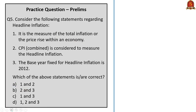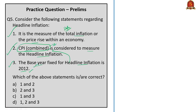The fifth practice question is on headline inflation. Statement 1 — it is a measure of total inflation or total price rise within an economy — is correct. Statement 2 — CPI combined is used to measure headline inflation — is correct. Statement 3 — the base year fixed for headline inflation is 2012 — is also correct, since the CPI combined base year is 2012. Therefore the correct answer is option D, all three — one, two and three.